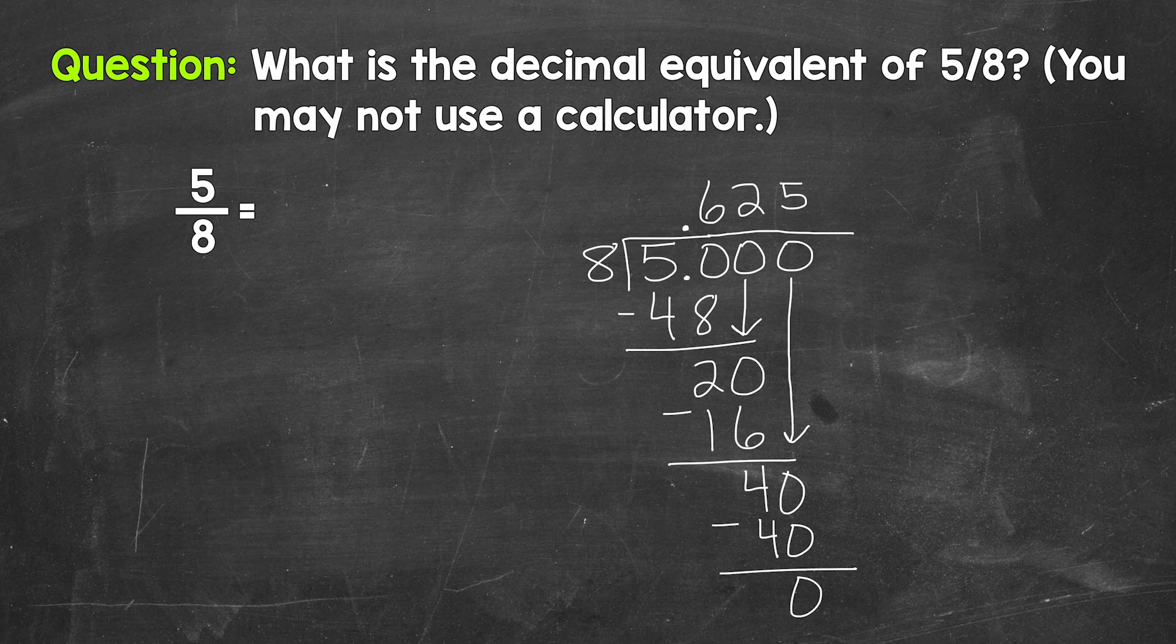So now we have that clean cut zero there at the bottom and nothing else to bring down within our problem. So we are done. Five eighths equals 625 thousandths. So let's write this over here. Five eighths equals 0.625 thousandths.